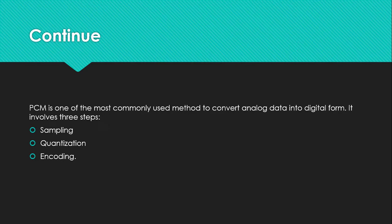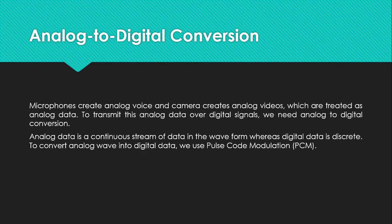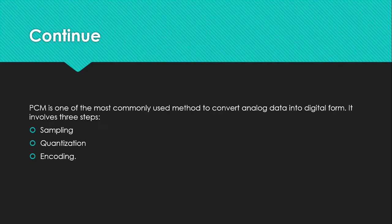PCM is one of the most commonly used methods to convert analog data into digital form. The best suitable method for analog data to digital form conversion involves three stages: sampling, quantization, and encoding.